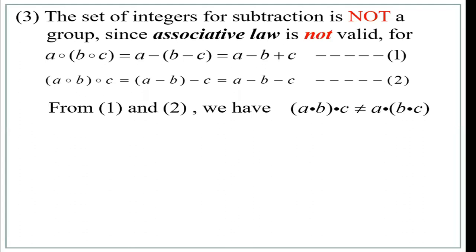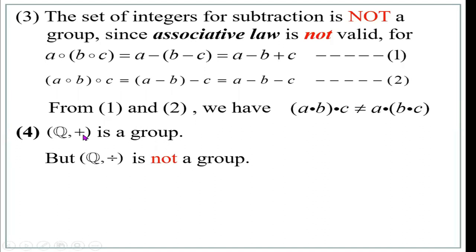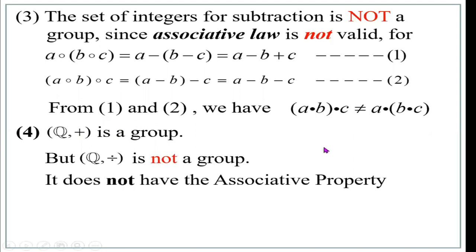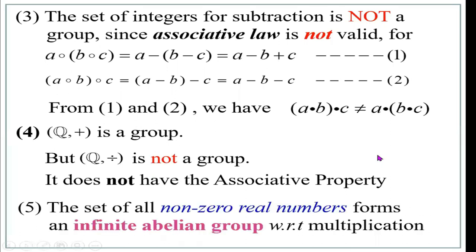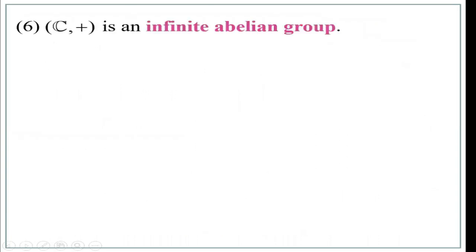So: Z with respect to addition is a group; Z with respect to multiplication or subtraction is not a group. Q comma plus is a group. Q with respect to multiplication is also a group, but with respect to division it is not a group since it does not have the associative property. The set of all non-zero real numbers forms an infinite abelian group with respect to multiplication. The set of complex numbers C with respect to addition is an infinite abelian group.